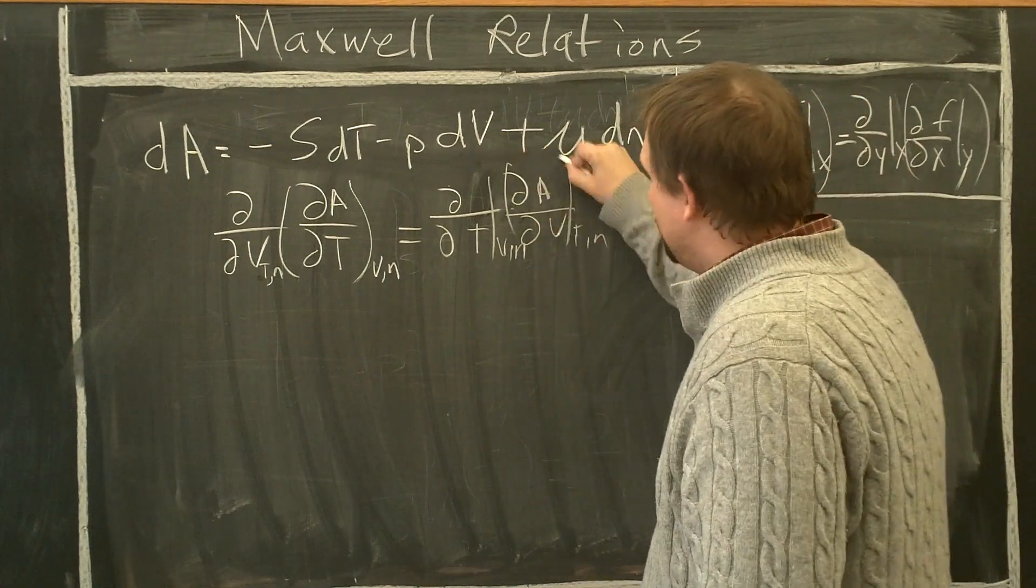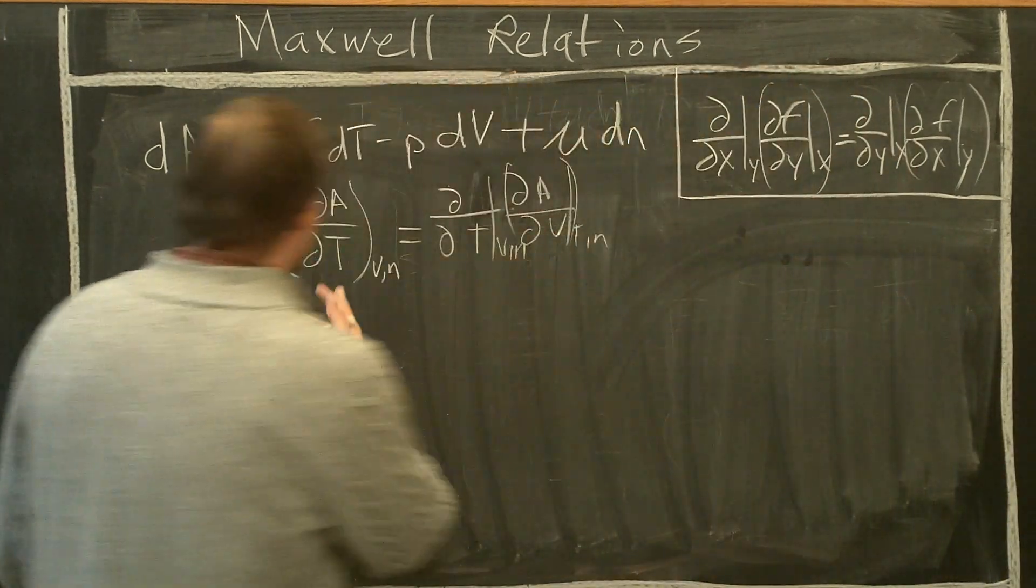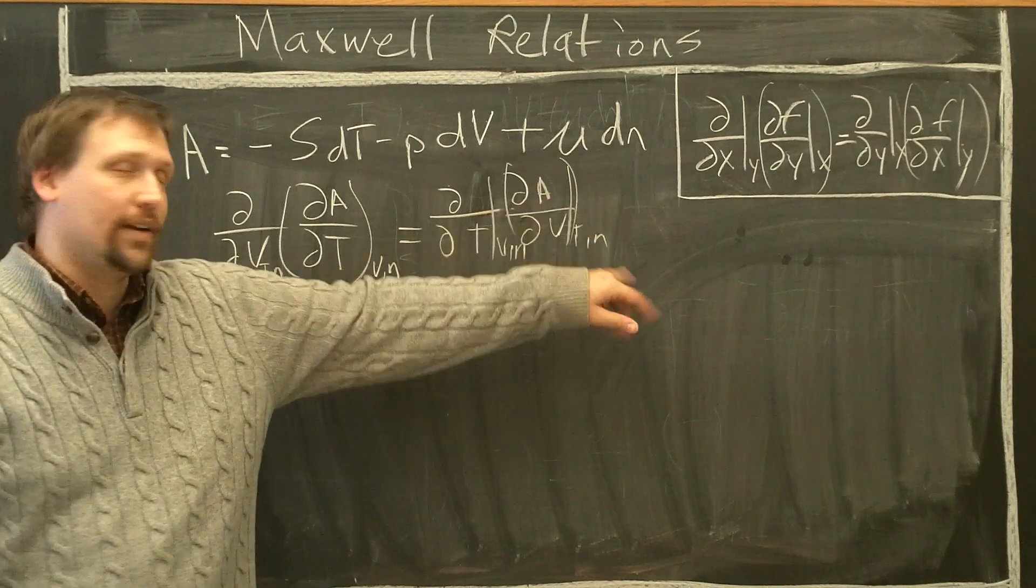So in order to do this, like before, we simply substitute in for what dA/dT is at constant V, and dA/dV at constant T.